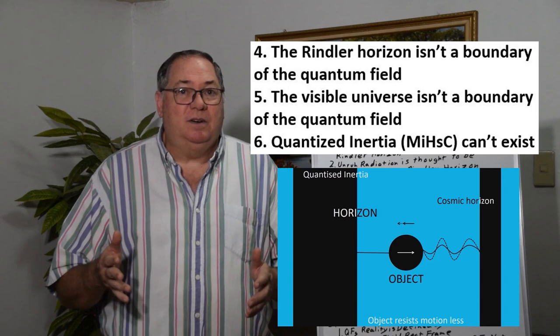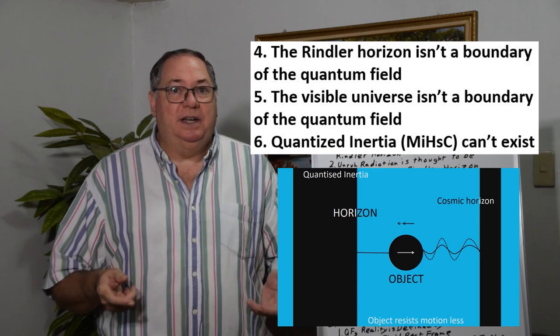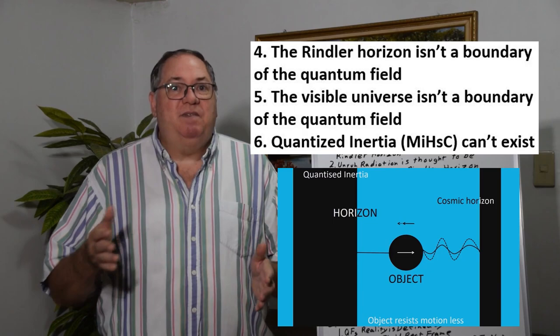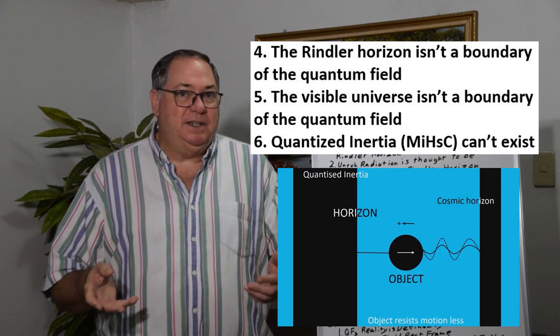Also, the so-called boundary of the universe isn't a boundary either. In quantum field theory, there's no boundary to the quantum field, no boundary to space. This is a fictitious boundary that was made up to support the Big Bang model.